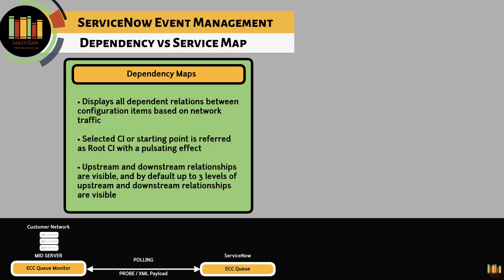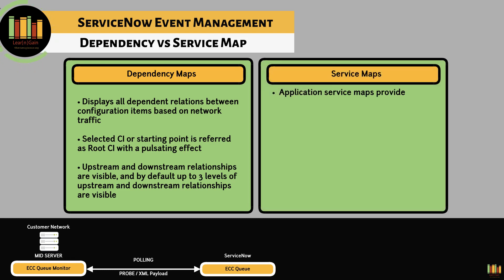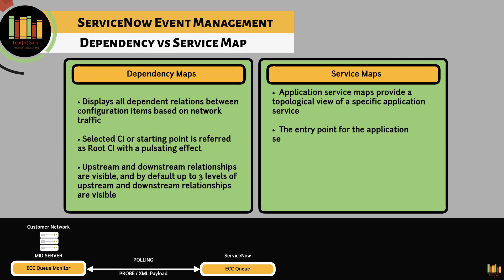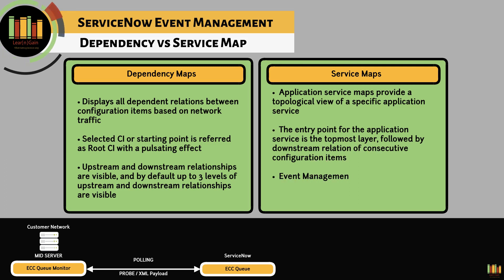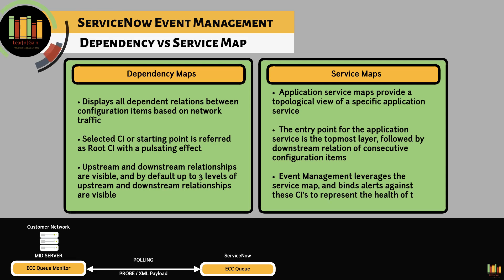Both upstream and downstream relationships are visible, and by default up to three levels of upstream and downstream relationships are visible. Application service maps provide a topological view of a specific application service. The entry point for the application service is the topmost layer, followed by downstream relations of consecutive configuration items. Event management leverages the service map and binds alerts against these CIs to represent the health of the service.